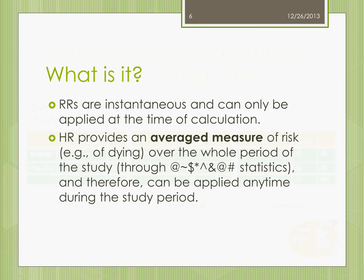Contrasting this with hazard ratios: relative risks are instantaneous and can only apply at the time they were calculated. Hazard ratios, in contrast, provide an average measure of risk — of dying, for example — over the whole period of the study through very complicated statistics, and therefore can be applied virtually any time during the study period. That is a major difference between hazard ratios and relative risk. Note that these two measures are many times used interchangeably, but that is not technically sound.